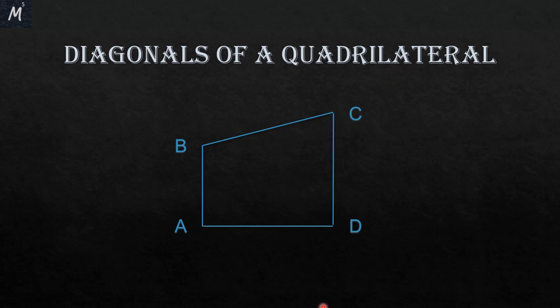In this video we are going to learn more about quadrilaterals. The first topic is diagonals of a quadrilateral. A diagonal of a quadrilateral is a line segment joining the two opposite vertices of the quadrilateral.